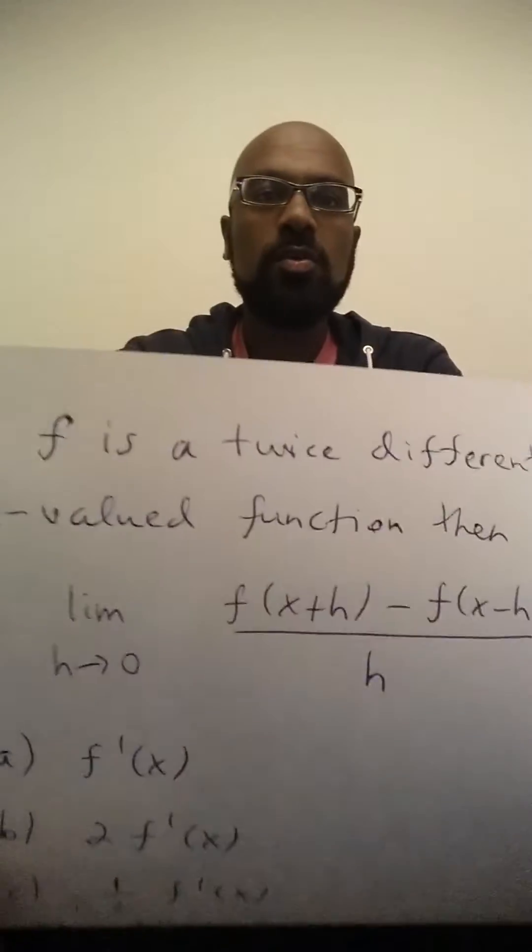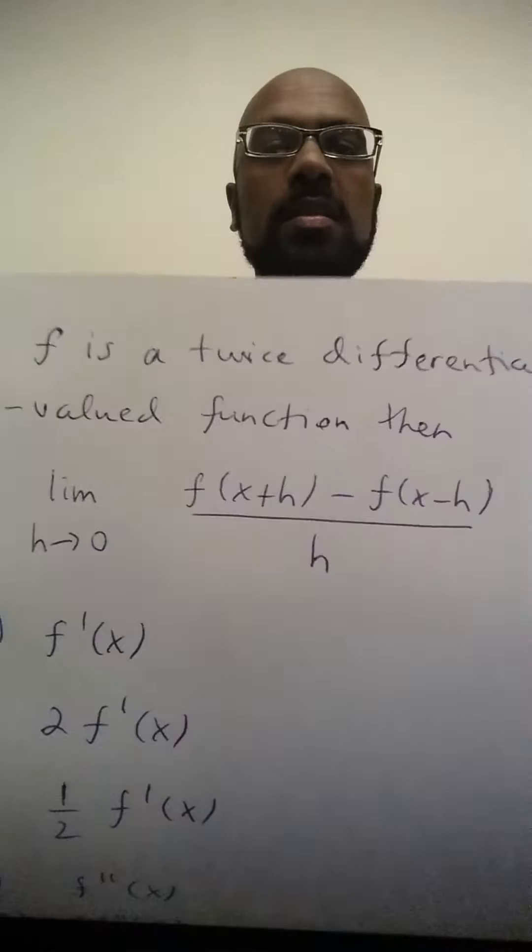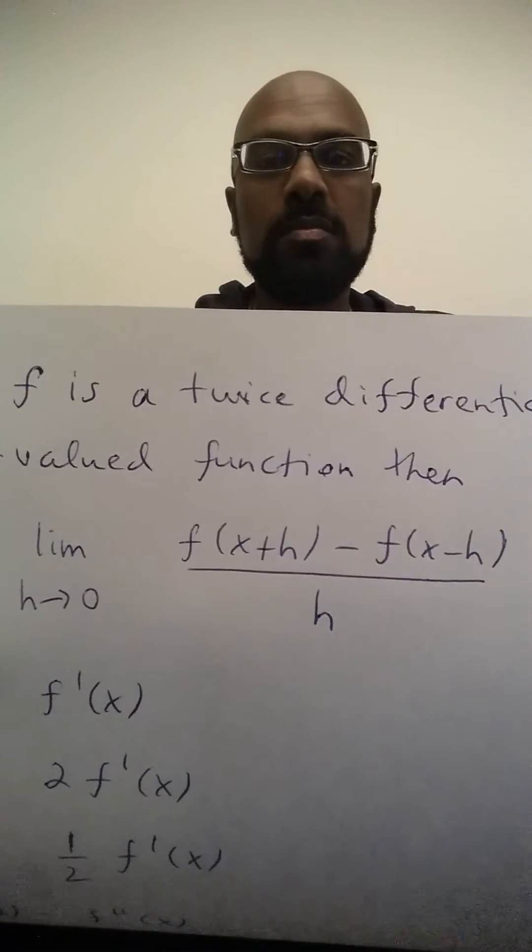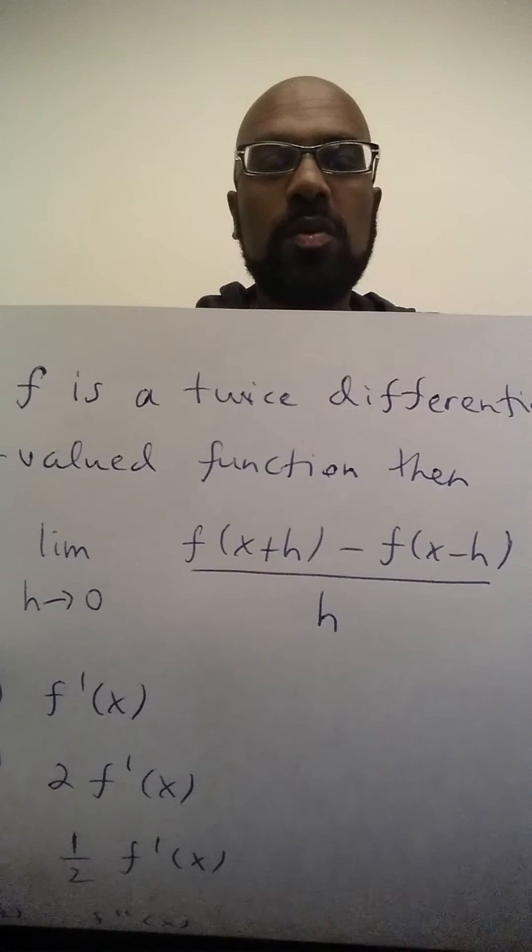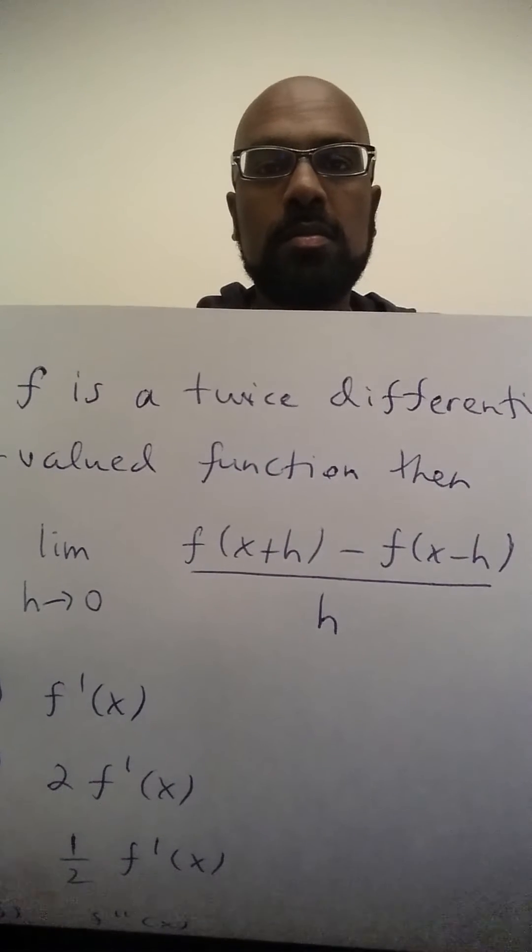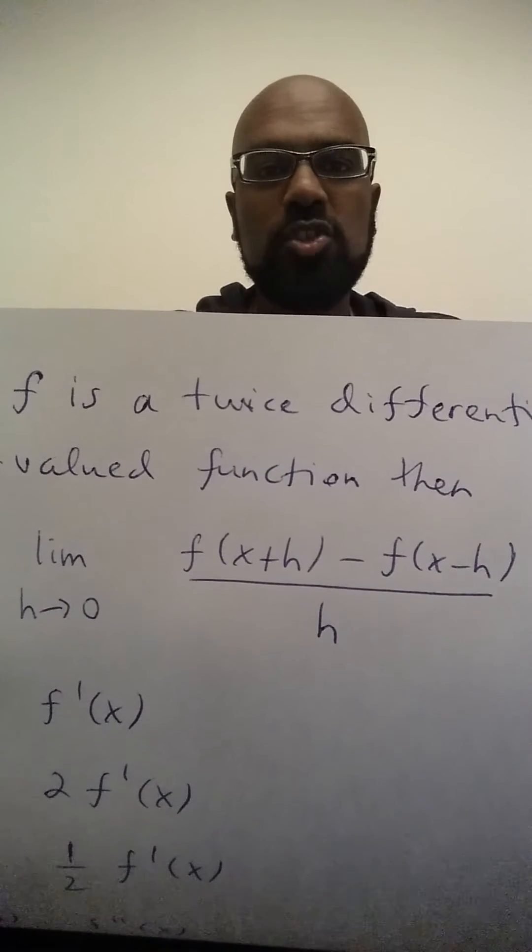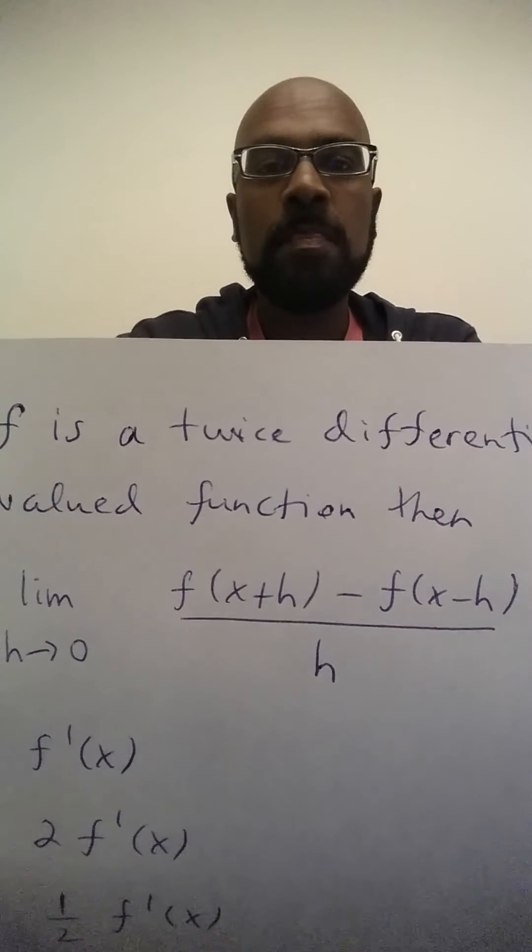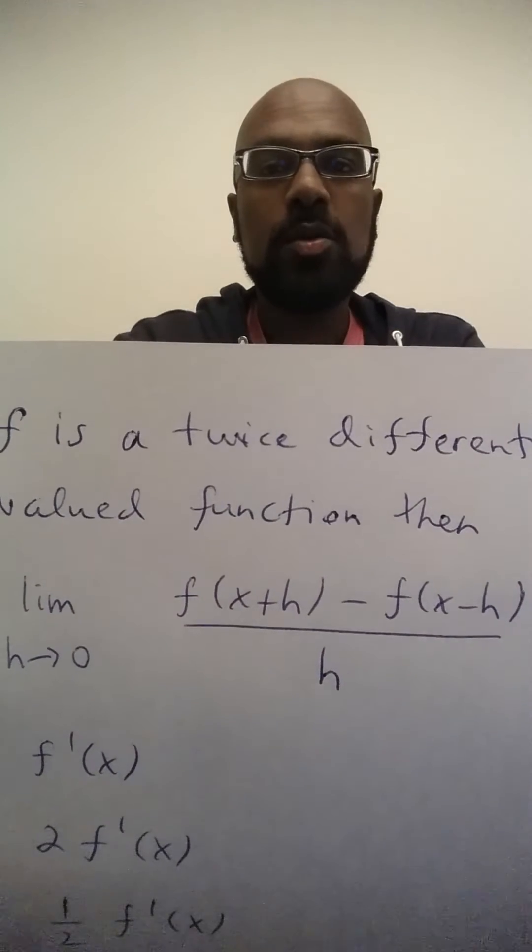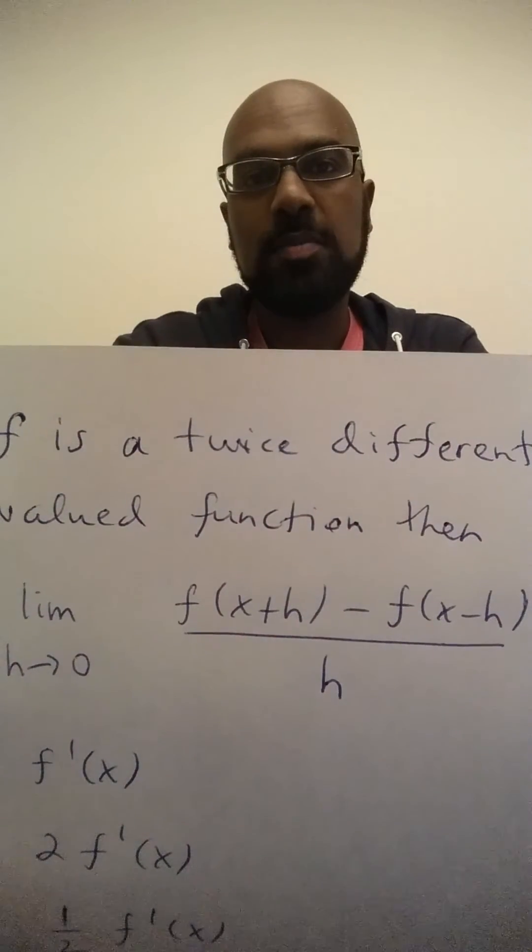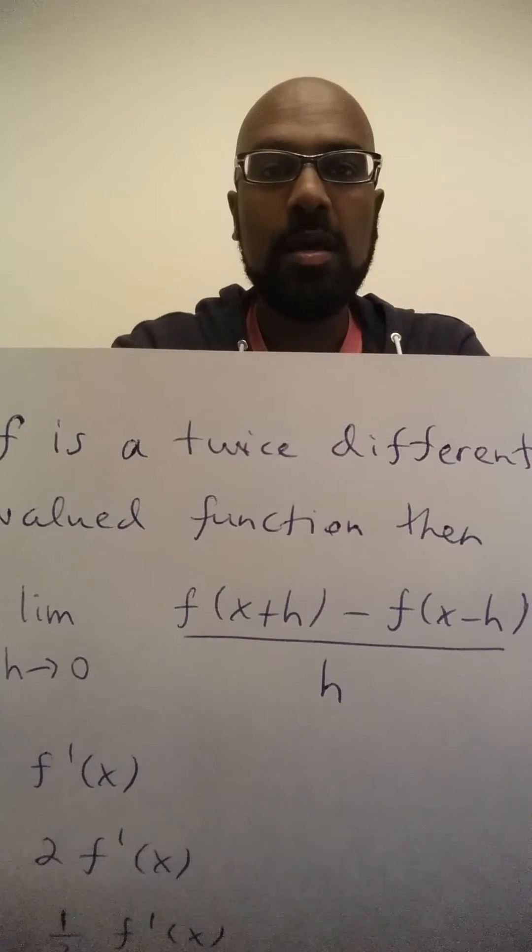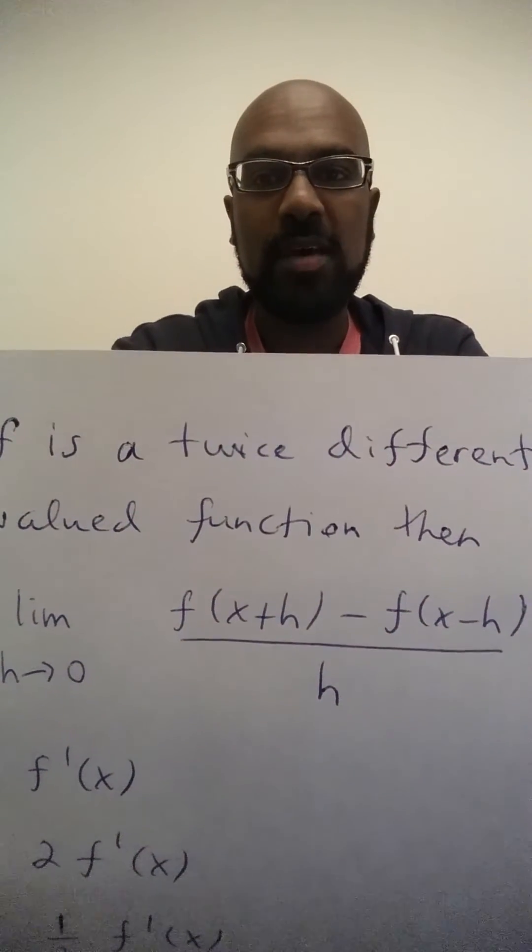All right, so it looks like this limit is related somehow to a difference quotient that gives you the derivative of your given function, but it's a little off. Now for those of you who are familiar and comfortable with this, you might notice that you can express this limit as the sum of two limits that incorporate the derivative from the left and the right.